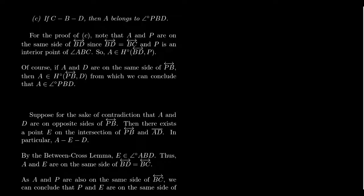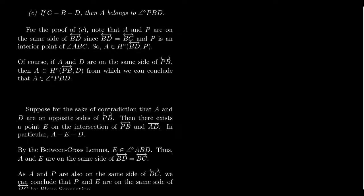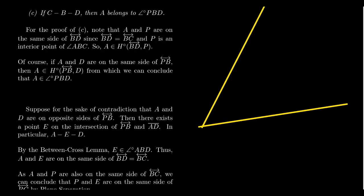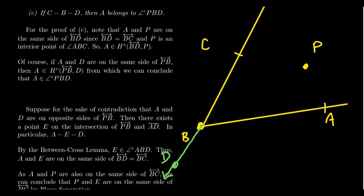Drawing a picture will help. We draw rays BA and BC with vertex B, point A, point C, and interior point P. D is a point such that B is between C and D, so D belongs to the line determined by B and C, on the opposite side from C. We're extending the line BC past B to get D. The claim is that A is interior to the angle PBD.